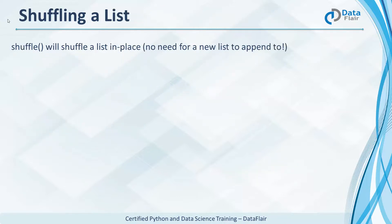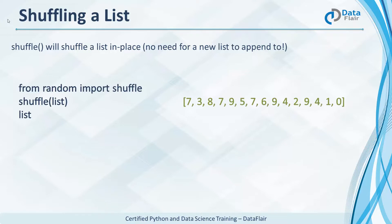Talking of random numbers, there's more to it than just picking. The random module also lets you randomly shuffle a list in place without using a second list. Let's shuffle the list and run it again.